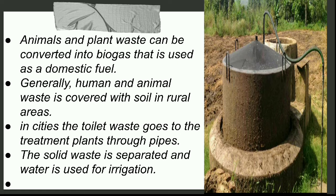Generally, human and animal waste is covered with soil in rural areas. In rural areas where there were no toilets, people would go to farms or open areas for nature calls. The waste left in the soil automatically became a breeding ground for different types of germs, flies, and mosquitoes, which would then spread diseases. So it was very harmful. In cities, toilet waste is sent to treatment plants.